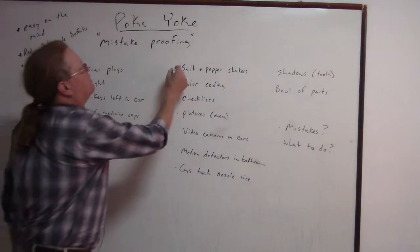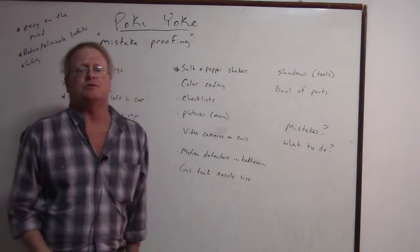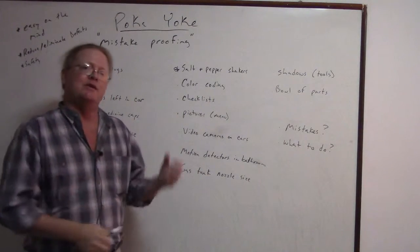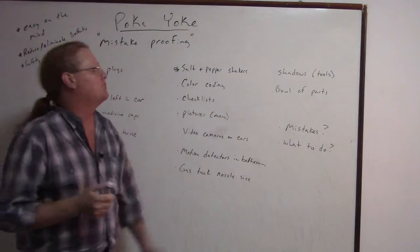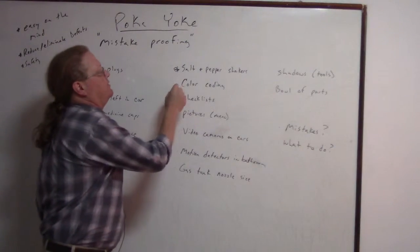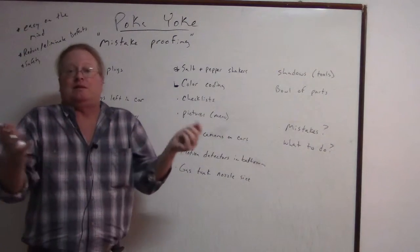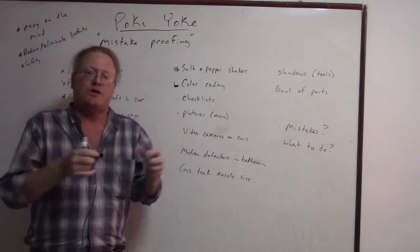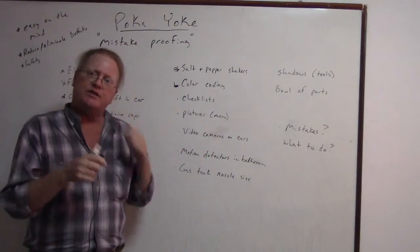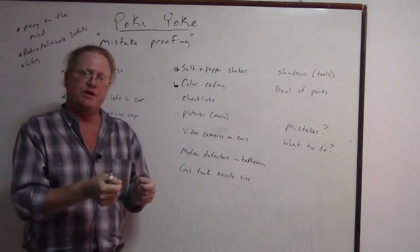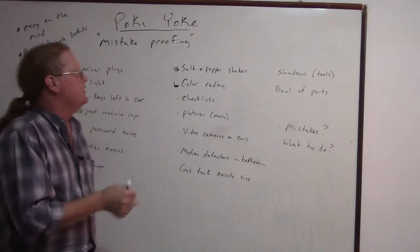Also a simple one: salt and pepper shakers. The salt is white, the pepper is gray or black. Color coding for like whatever you're trying to do—like cup size or if you're in the kitchen, the cup would be green, the half a cup would be blue, things like that.